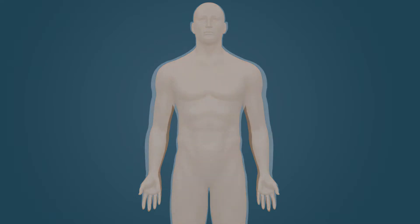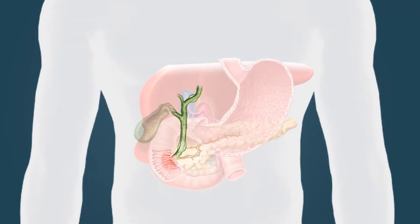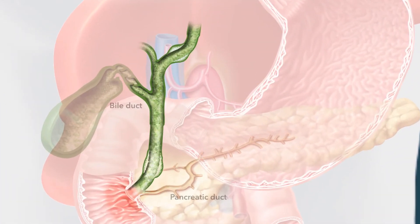ERCP is an endoscopic procedure through which we address problems of the bile duct and also the pancreatic duct. People can have various bile duct issues such as bile duct stones, a bile duct stricture, or a tumor blocking the bile duct. For this we can do an ERCP and solve the problem either by removing a stone or possibly putting in a stent. ERCP is also used for pancreatic disorders, where we deal with the problem similarly but we're in the pancreatic duct rather than the bile duct.